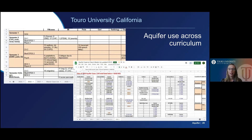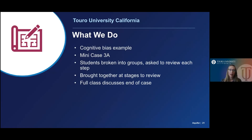This slide gives you an example of a tracking program our medical director developed. Because we utilize so many different Aquifer cases across the full library, we had to find a way to track usage and ensure we weren't being redundant across didactic and clinical year, and also not omitting any valuable cases. We track by cohort classes, semesters, and by case usage — so if a faculty member finds a great case, they check the master list before applying it to their course.